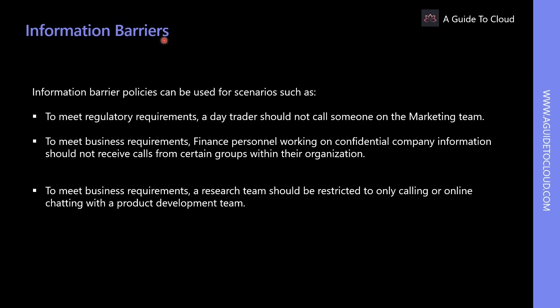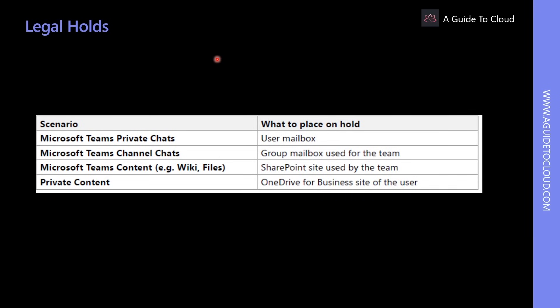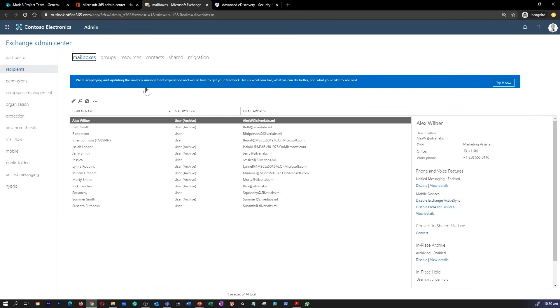Information barriers in Teams are used to prevent individuals or groups from communicating with each other and also prevent lookups and discovery. If restricted users attempt to communicate with each other, they will not find that other user in the people picker. In contrast to ethical walls in Exchange, information barriers also apply to chat, voice, and sharing services across different Office 365 workloads. Users or Teams can be put on legal hold to preserve all business data and communications — when a user or group is placed on hold, all message copies are retained.